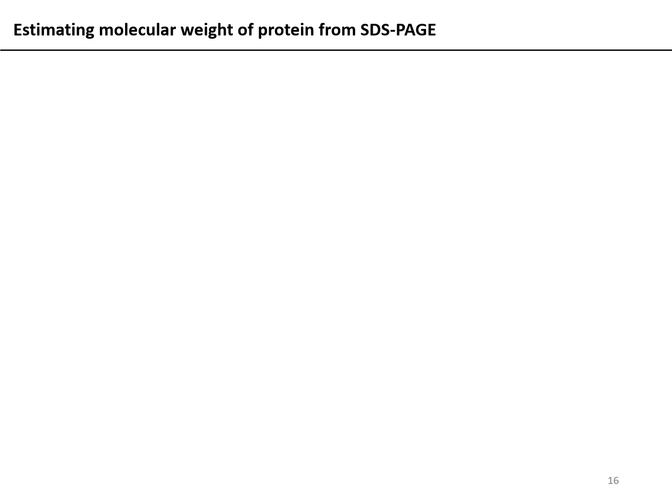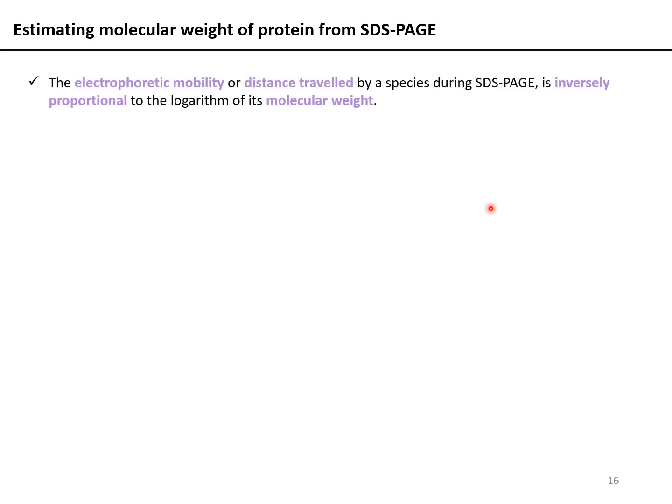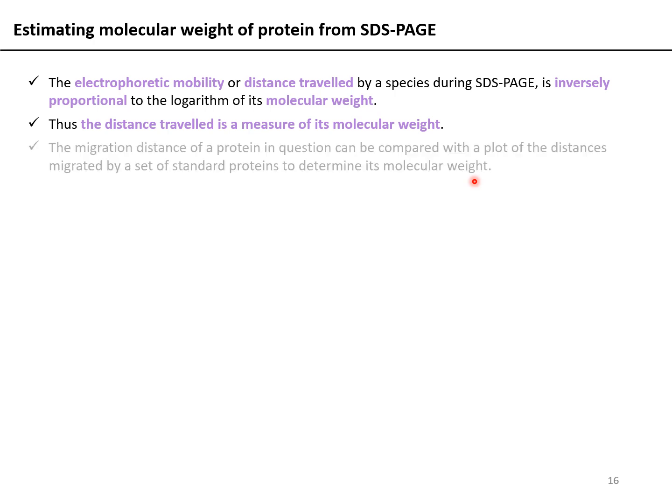The better you de-stain a gel, the more contrast you will get between your bands of interest and the background. To estimate molecular weight from SDS-PAGE: the electrophoretic mobility — or distance traveled — by a species is inversely proportional to the logarithm of its molecular weight. Therefore more distance traveled means lower molecular weight, and less distance means higher molecular weight. The migration distance of a protein is compared with a plot of distances migrated by standard proteins to determine its molecular weight.